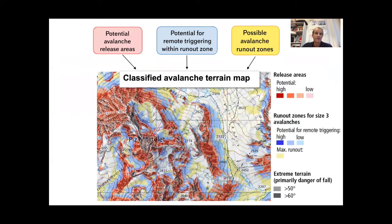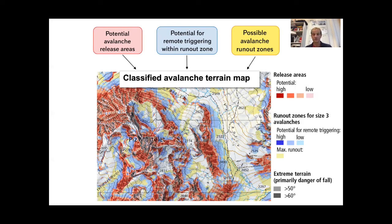Finally, the layers from the three simulation methods were combined into a single classified avalanche terrain map, which is now open to the public. It distinguishes between release areas, areas below slopes where remote triggering is potential, and the run-out of maximum size class 3 avalanches.